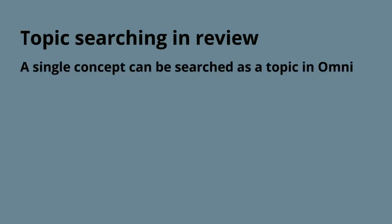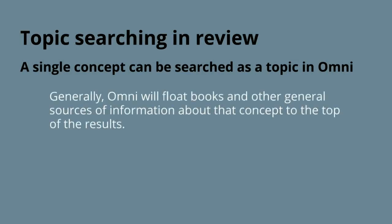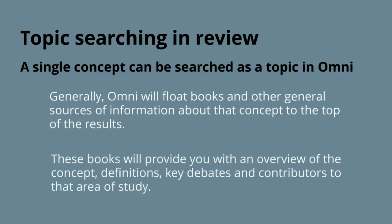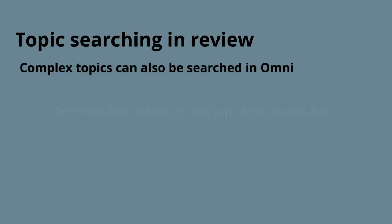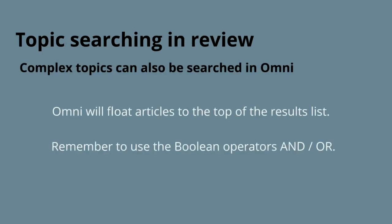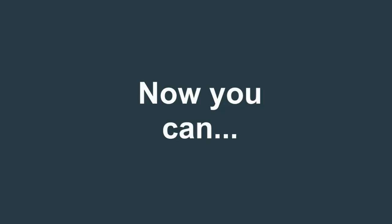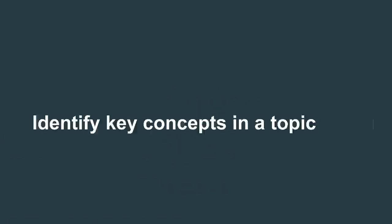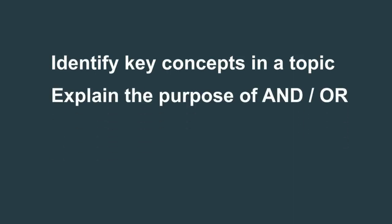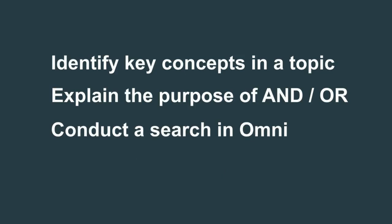There is a lot to learn about finding resources in an academic library. In review: you can search a single topic in Omni, which will float books and other general sources to the top so you get background and foundational information. Focused complex topics can also be searched in Omni, where articles will float to the top. Remember to use the Boolean operators AND and OR to make your advanced keyword searches more effective, and use facet limits to make results more manageable and relevant. Having watched this video, you can now identify key concepts in a topic, explain the purpose of AND and OR in a search statement, conduct simple and complex topic searches in Omni, and find PsycInfo — the main database for psychology.